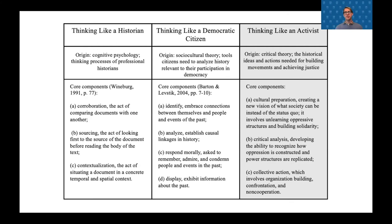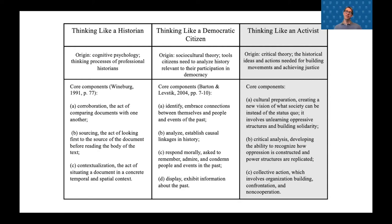Over the last 50 years, there have been two paradigms that have pushed us to think differently about history education. The first comes from cognitive psychologists — Sam Wineburg might be one of the most well known — who in the late 80s and early 90s argued that history education should model the thinking processes of professional historians, so that students can analyze and interpret the past much as historians do. Then in the late 90s and early 2000s, another group argued that while it's important to analyze and interpret the past, it's even more important that citizens can use the past as a tool to participate in democracy. This theory came from sociocultural theorists, and I would label it thinking like a democratic citizen.